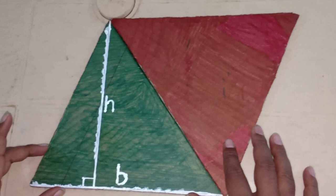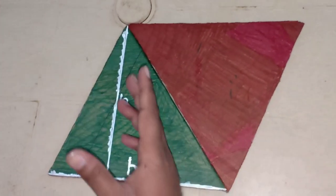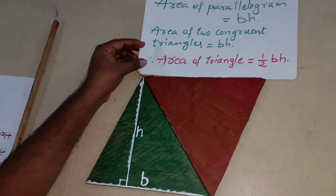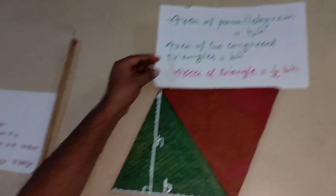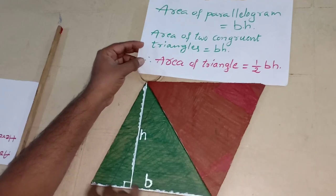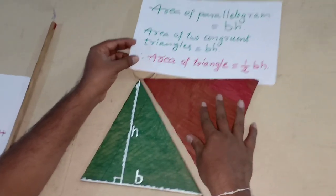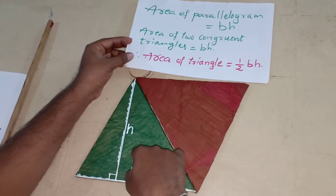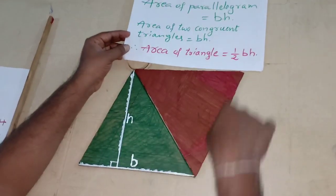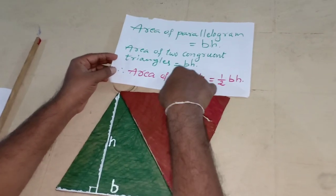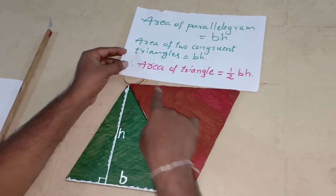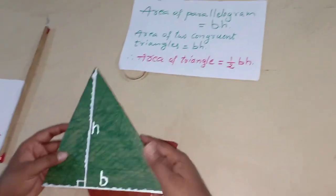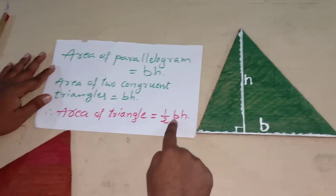We already learnt the area of the parallelogram formula. Area of the parallelogram is equal to base into height, where B is any side of the parallelogram and H is its corresponding height. In this parallelogram, we have two triangles. So the area of this parallelogram is equal to the areas of these two triangles, meaning area of two triangles equals base into height. If area of two triangles equals base into height, then area of one triangle equals half into base into height. So the area of triangle formula is: area = ½ × base × height.